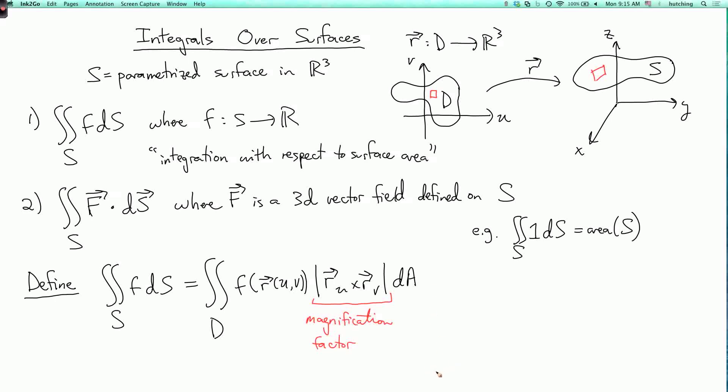The more general physical interpretation is that if S is a sheet of some material with a mass density rho from S to R, then m equals the double integral over S of rho ds is the total mass of the sheet. You can also recover the center of mass of the sheet analogously to what we did before. You take 1 over m times the double integral over S of x rho, y rho, z rho ds, and that gives you the center of mass.